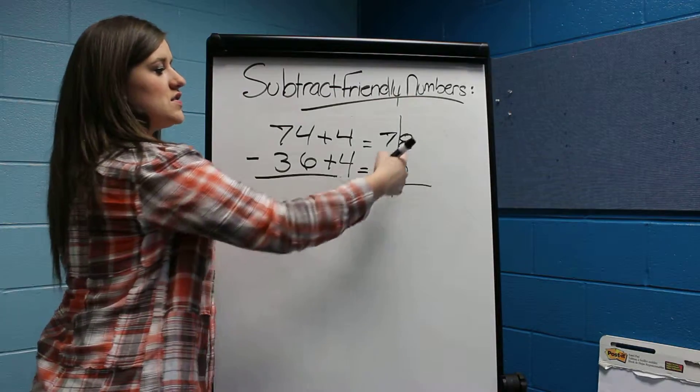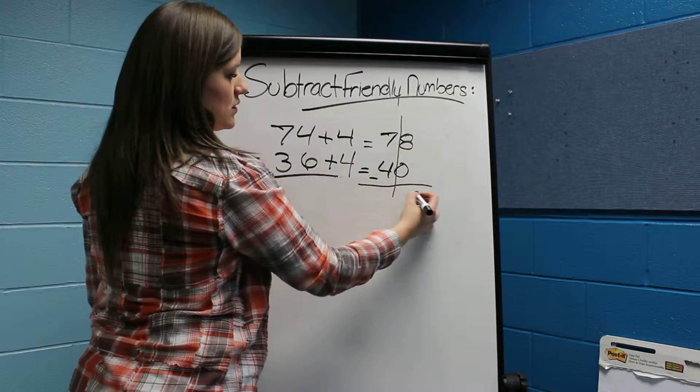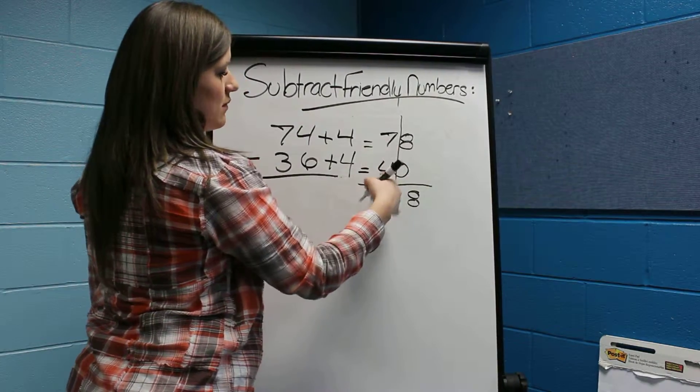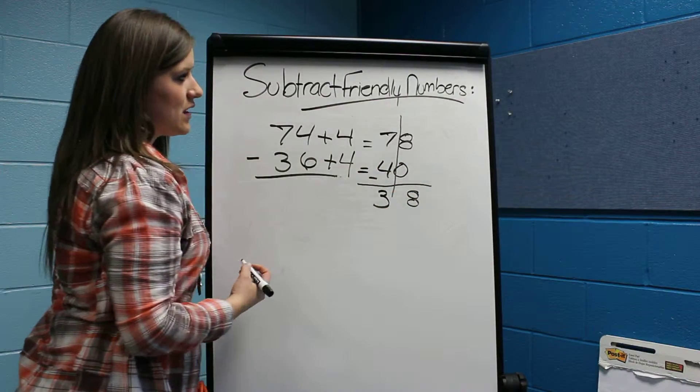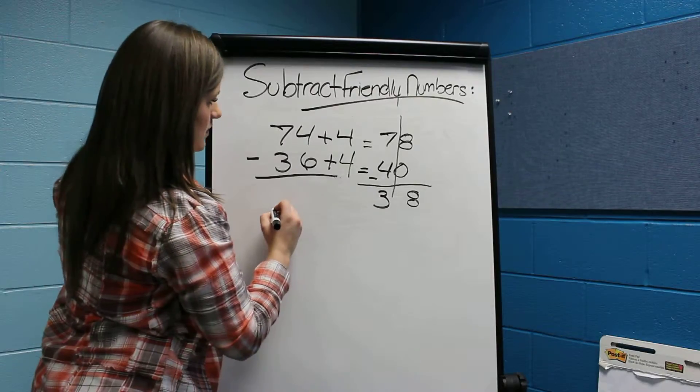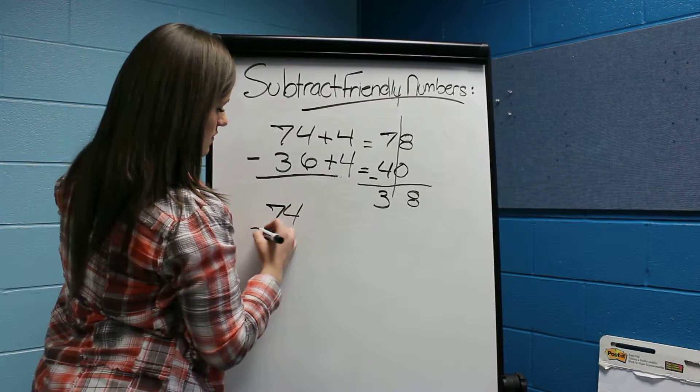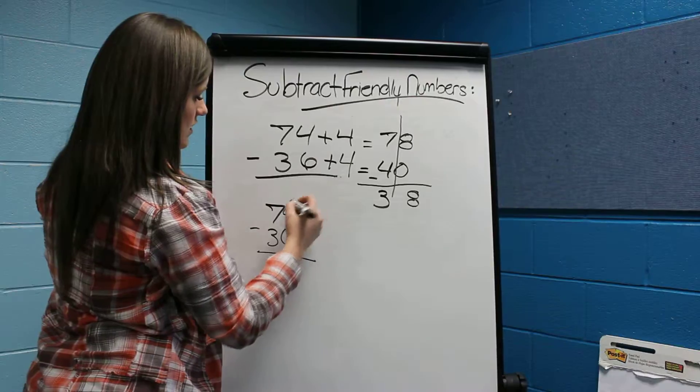We have 78 minus 40. 8 minus 0 is 8, 7 minus 4 is 3, which equals 38. Now we're going to check this answer with 74 minus 36.